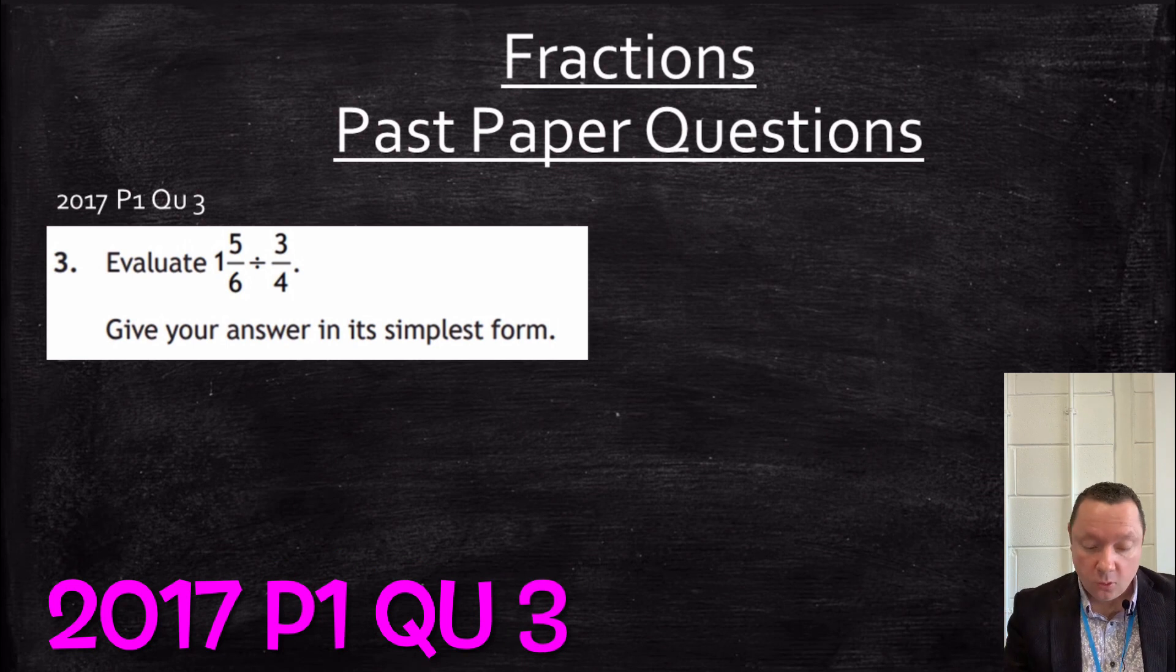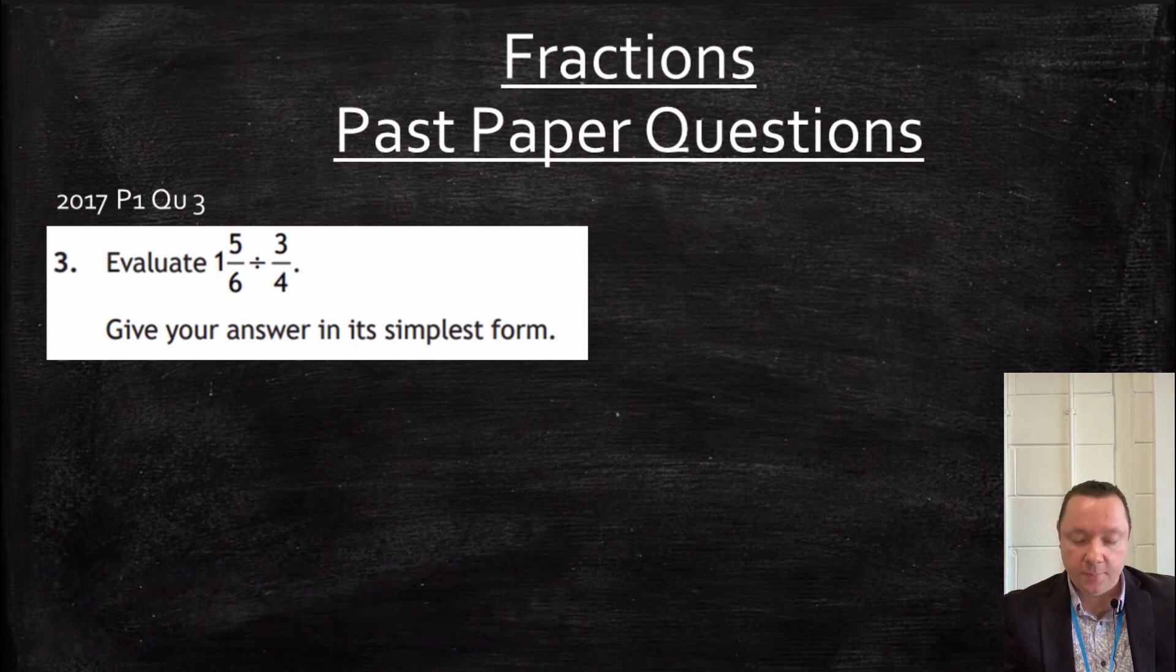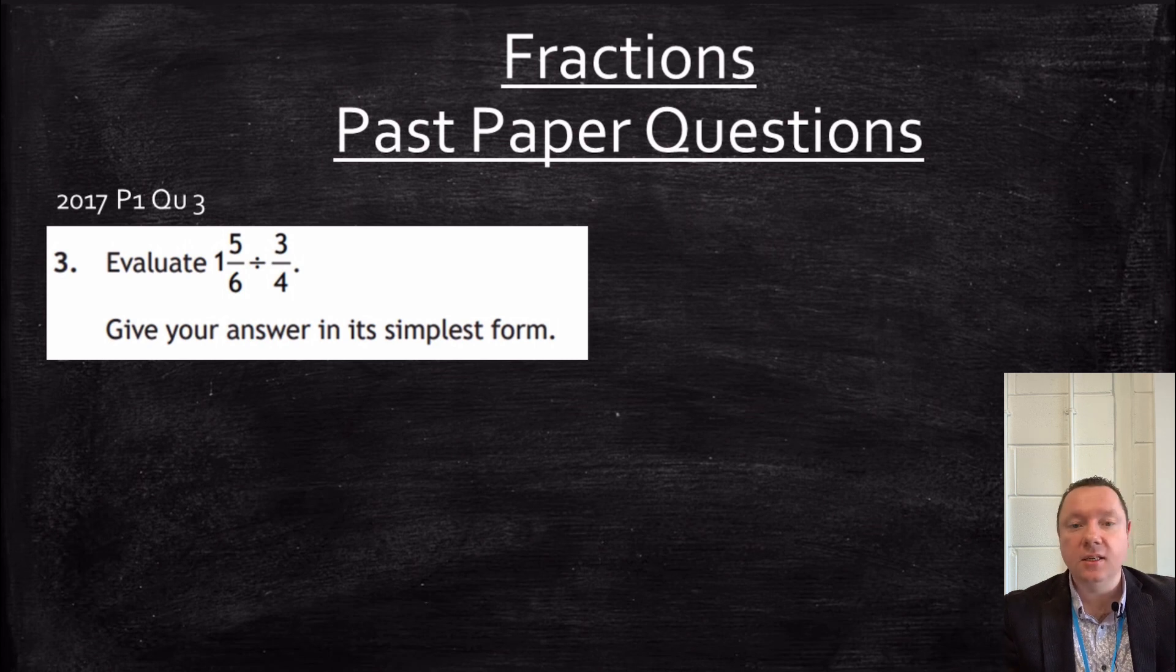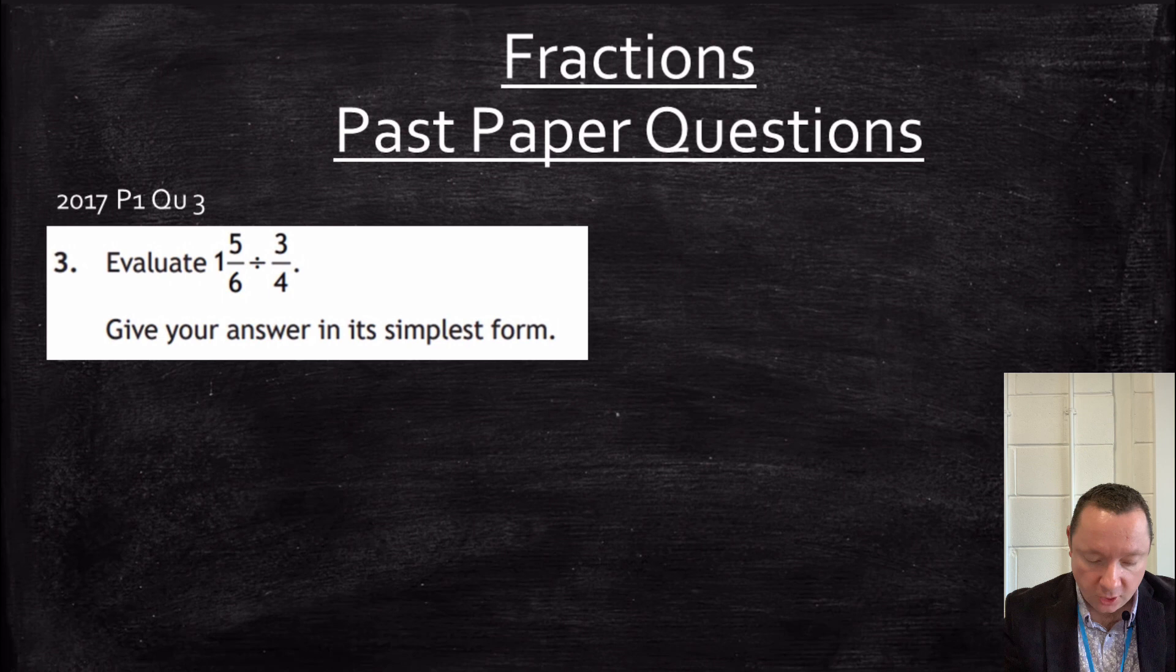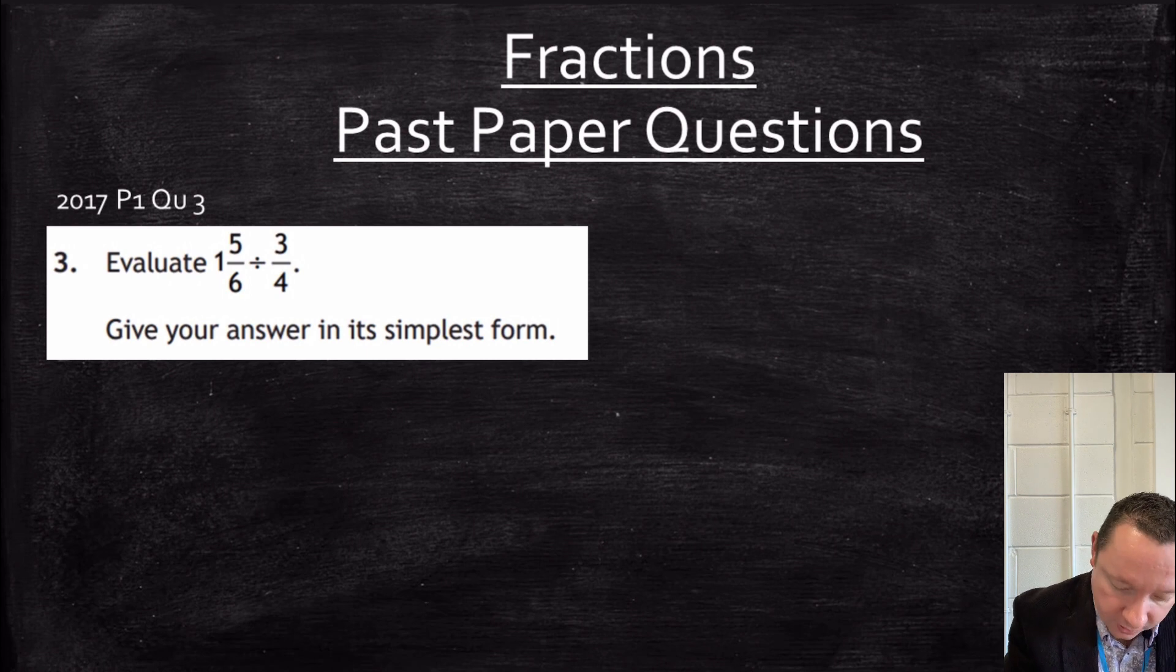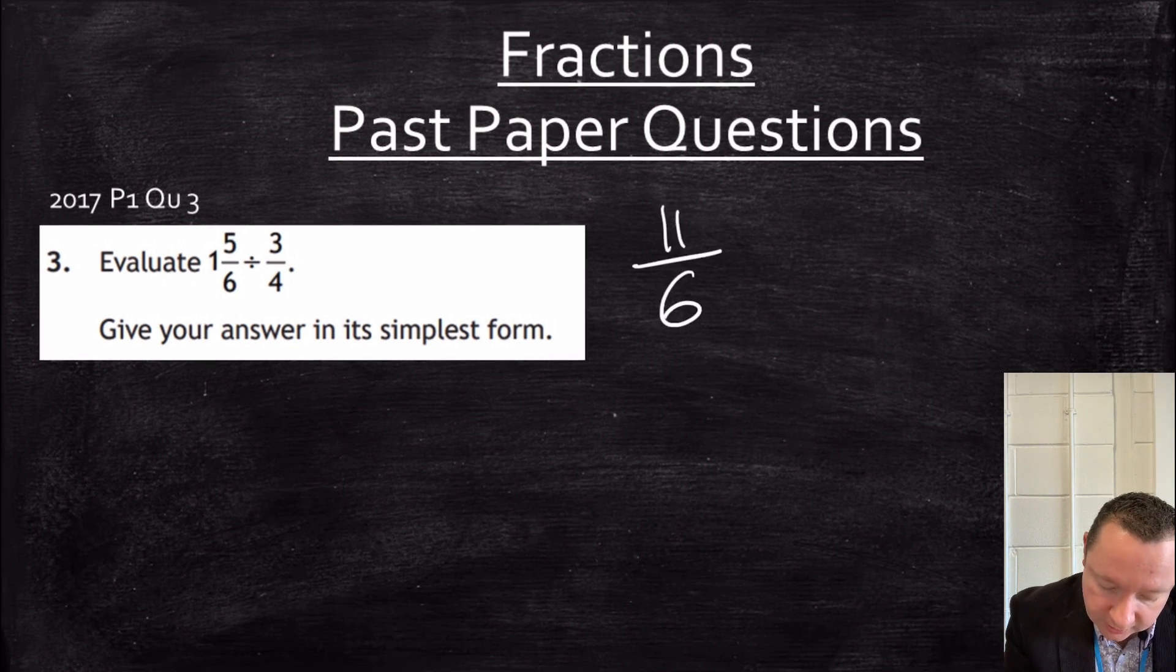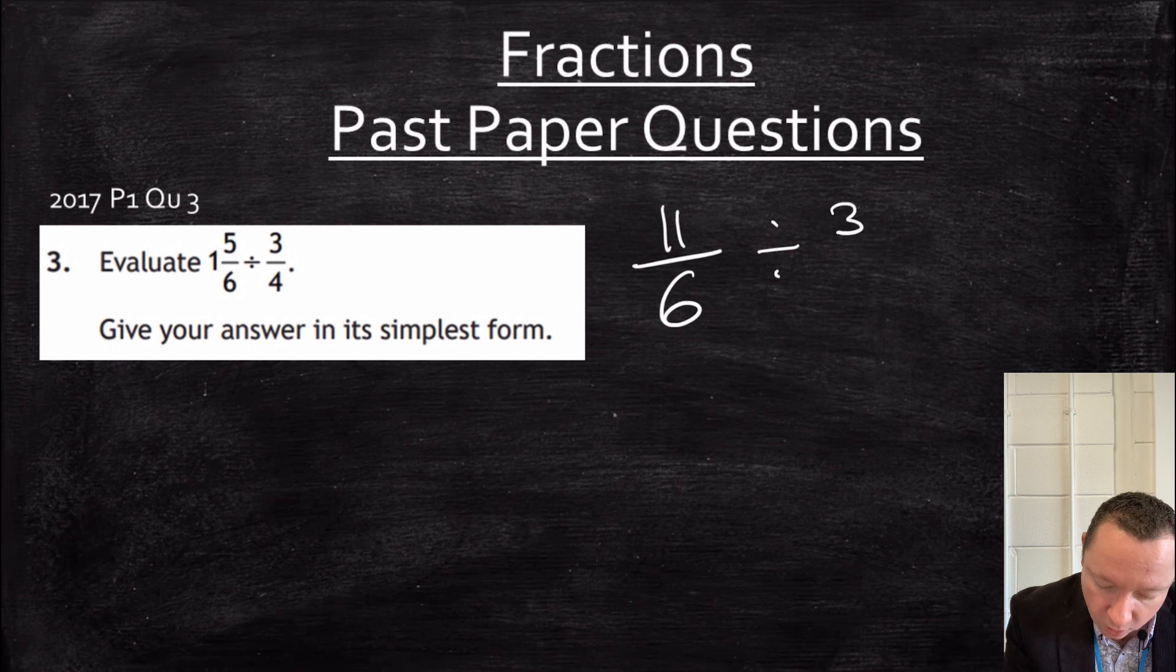Okay, 2017, paper 1, question 3 says, evaluate one and five sixths divided by three quarters and give your answer in its simplest form. So we change the mixed numbers into fractions first. So one and five sixths. One times six is six plus five is 11. So that becomes 11 over six divided by three quarters.